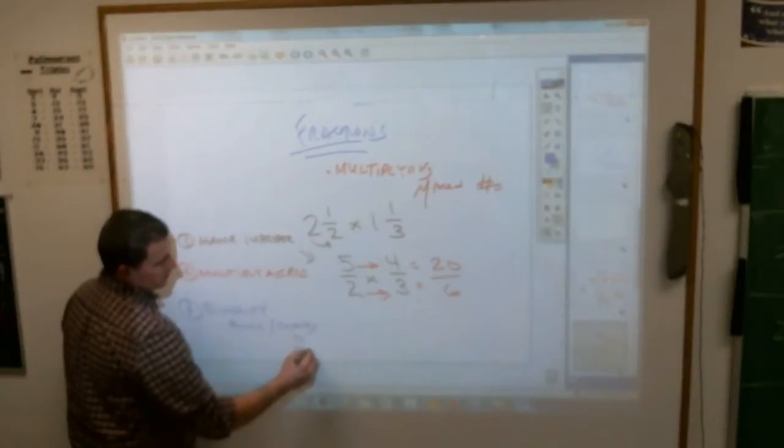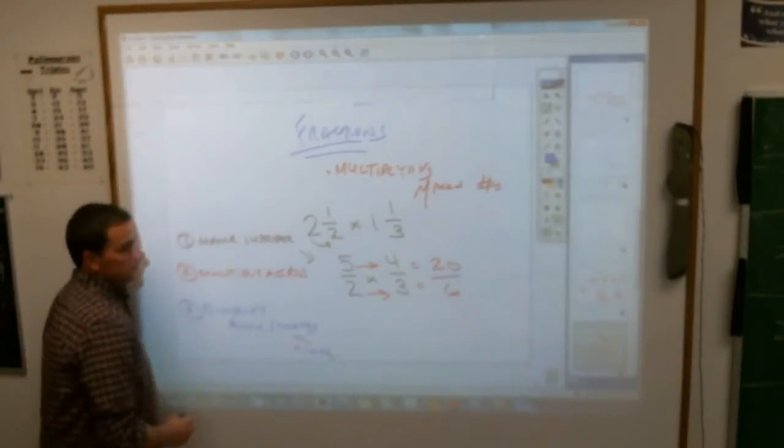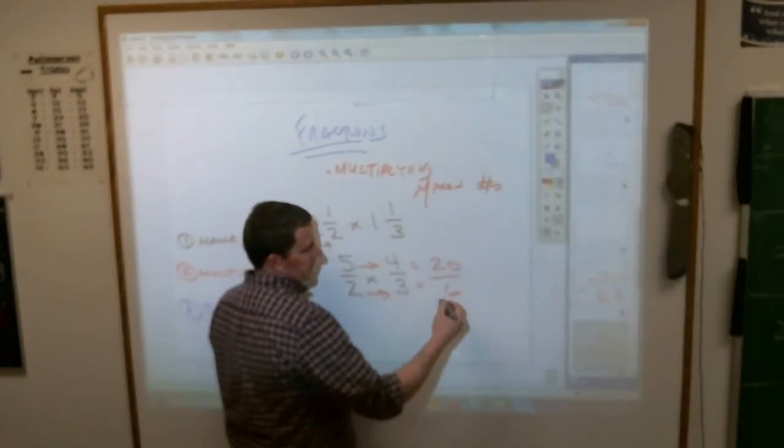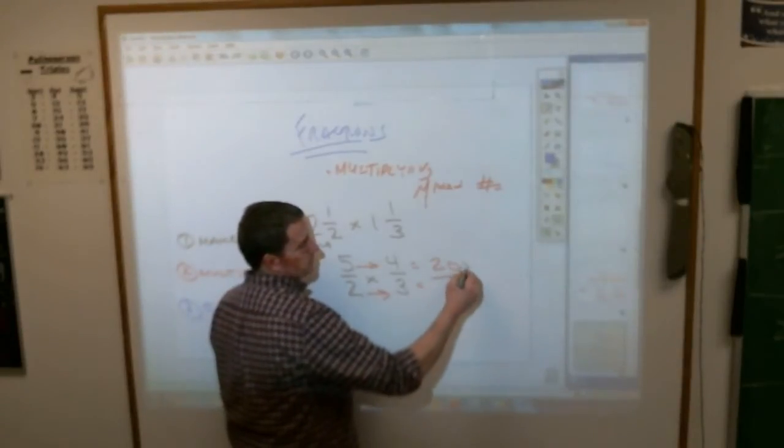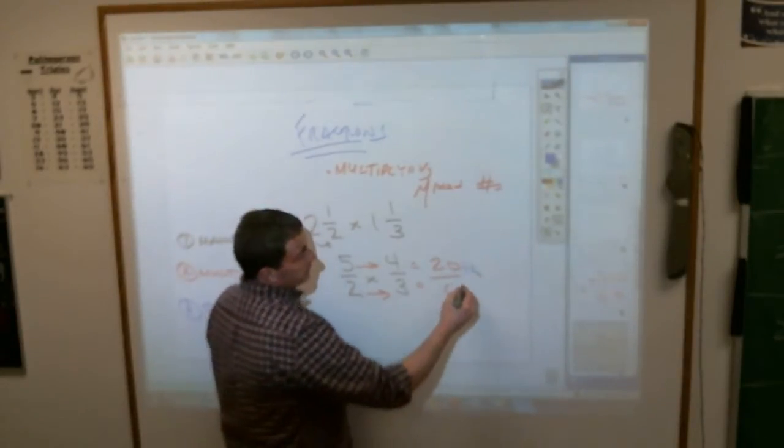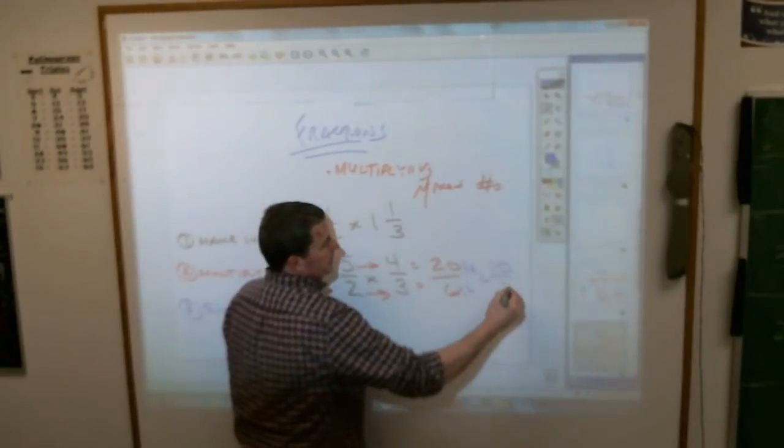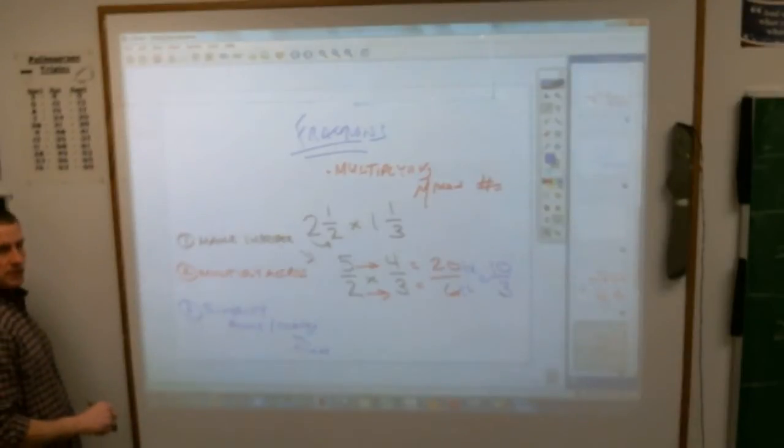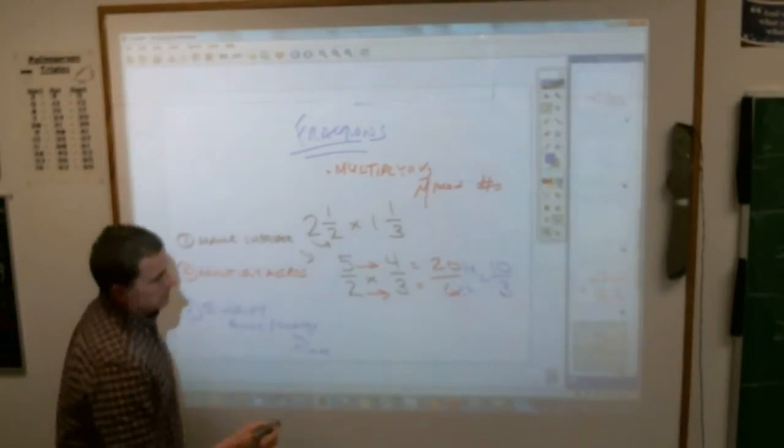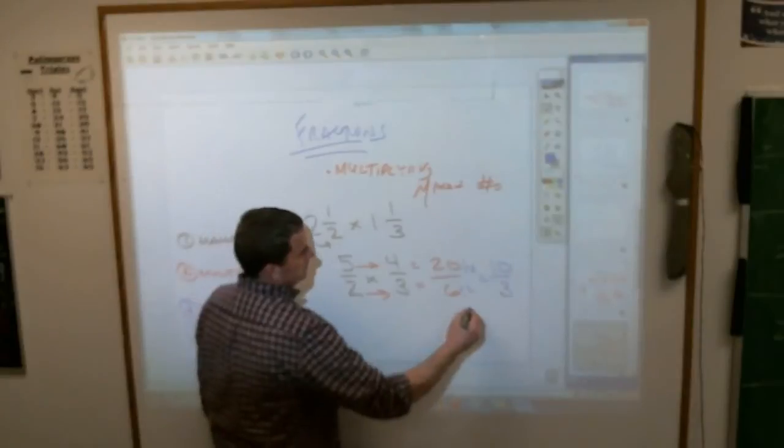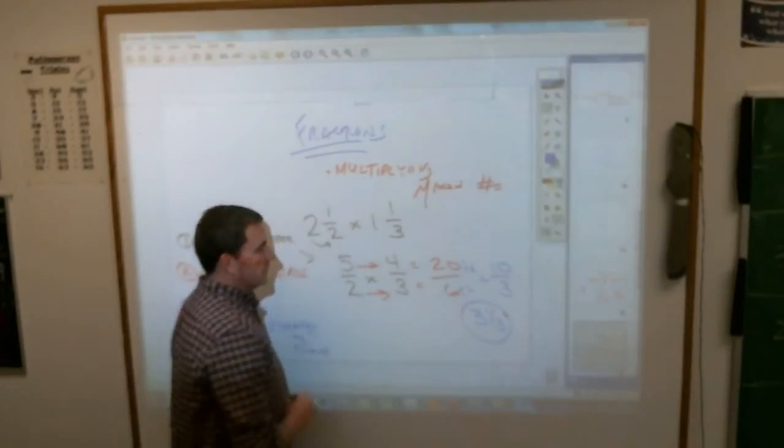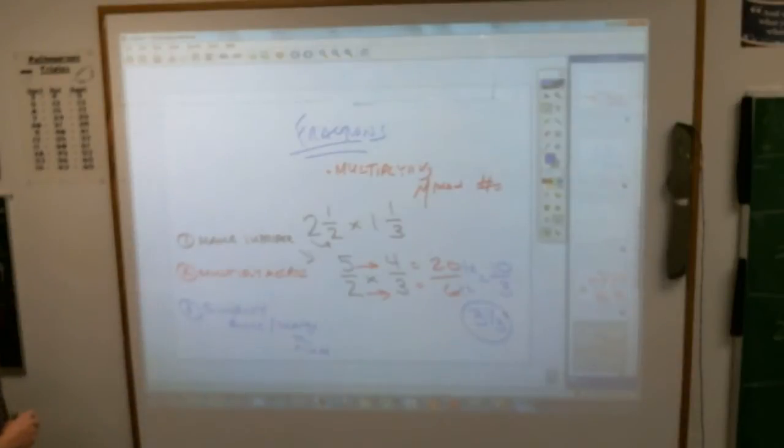As a personal preference, I like to reduce first. What number goes into both of those two? If I divide by two, you end up with 10/3. And 10/3 is what mixed number? 3 and 1/3.